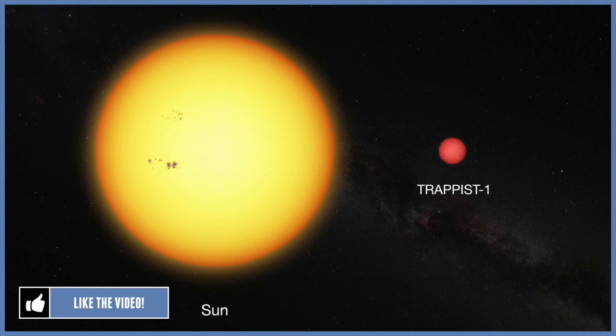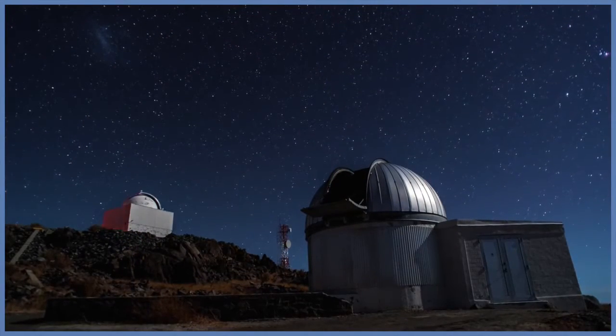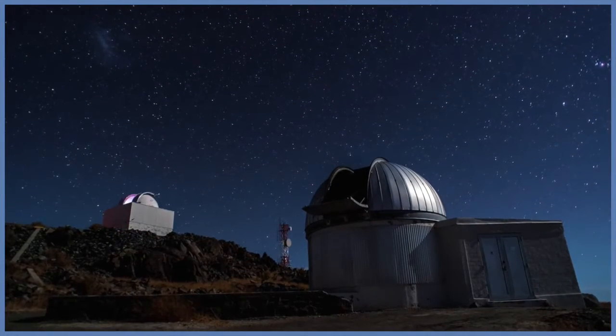This star is located 40 light-years away from Earth in the constellation of Aquarius. Because they are located outside of our solar system, these planets are scientifically known as exoplanets.